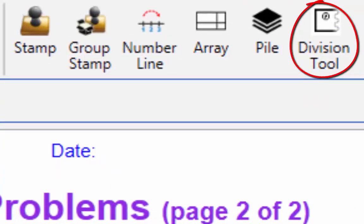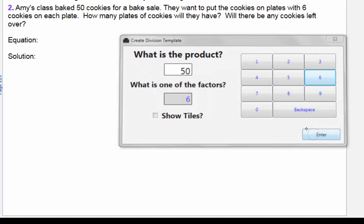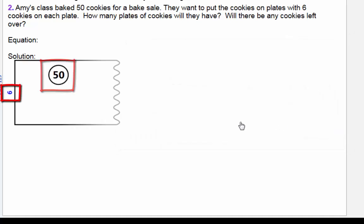The division tool provides students with a visual model for division in terms of arrays. The student specifies a product and one factor to create a division template. The product appears at the top, and the factor has a vertical dimension. Since the quotient is unknown, the horizontal dimension is unfinished.